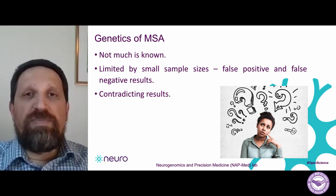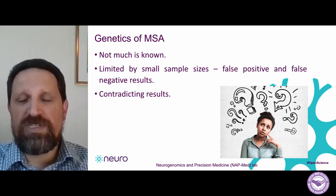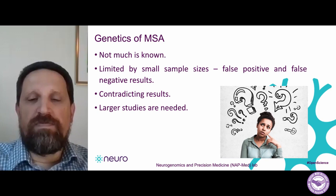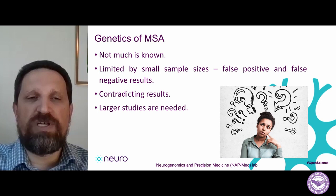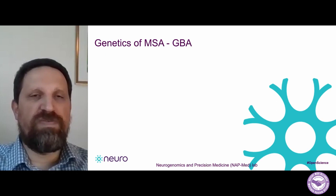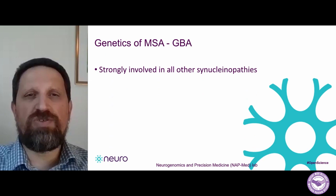Some papers show that a certain gene might be involved in MSA, and then a follow-up study cannot replicate the results. That doesn't necessarily mean the original study is wrong — the second study could be wrong, again because of small sample size. What we really need, and what geneticists studying MSA are aiming for, is to create much larger studies that will allow us to overcome these issues. The first gene I would like to talk about is GBA — a gene I already mentioned in Parkinson's disease.